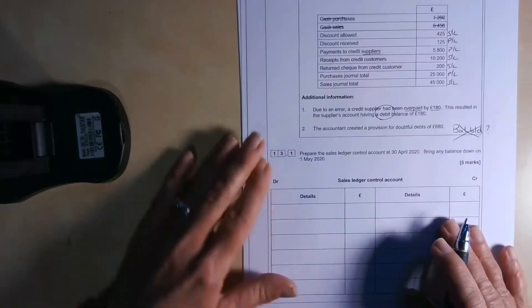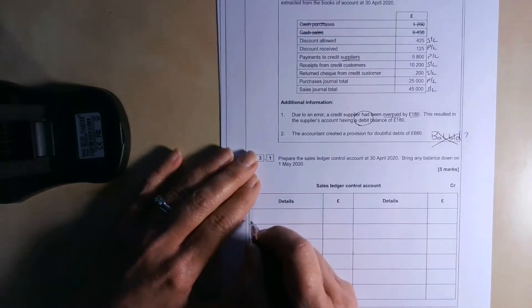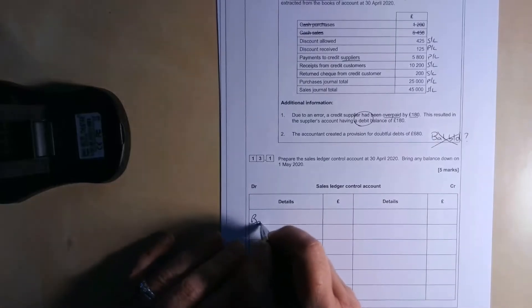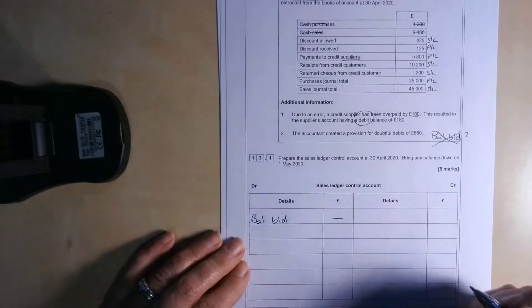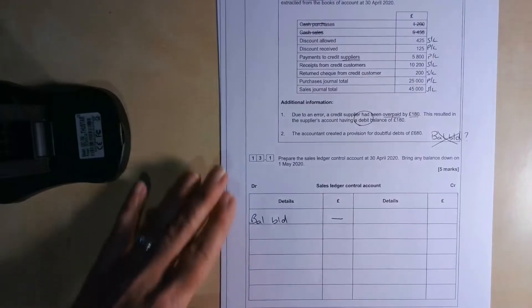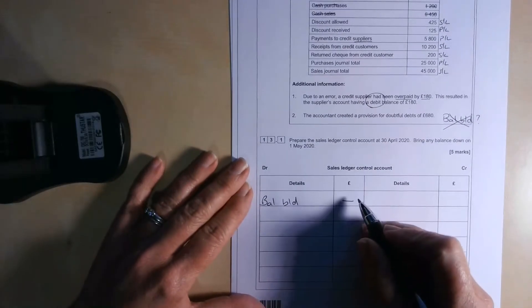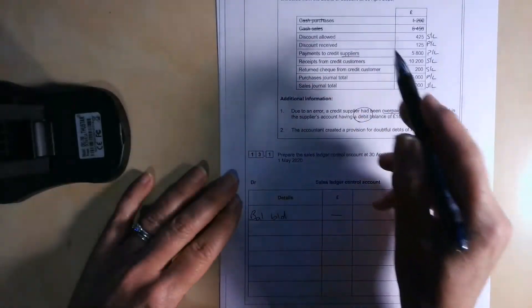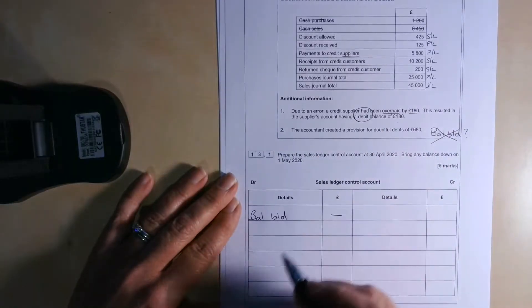So let's start with the sales ledger control account then. So the BAL BD would be, and I'll put this in just for completeness, just to remind you, would be on the debit side. These are trade receivables. So they're current assets. They owe us money. So any BAL BD, if we did have one up there, would be on the debit side.